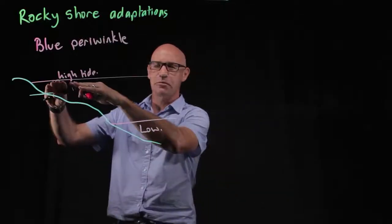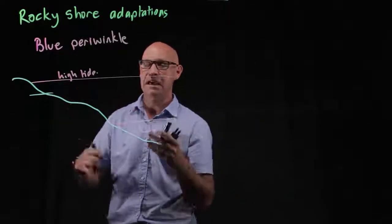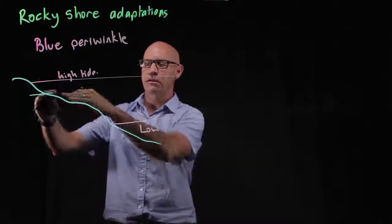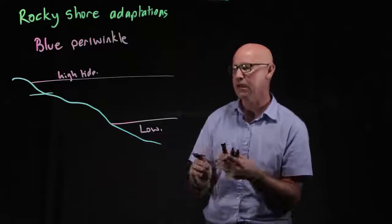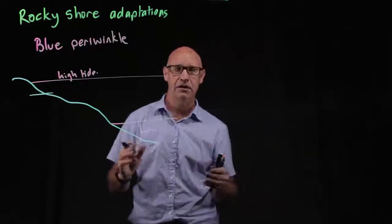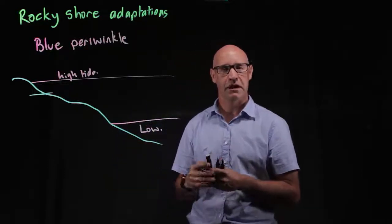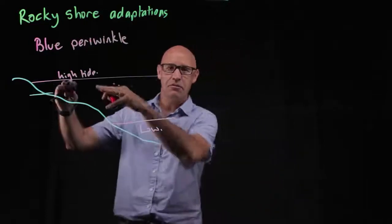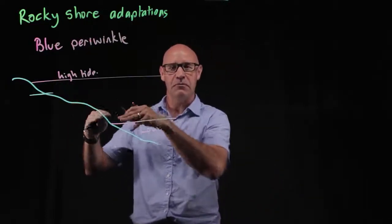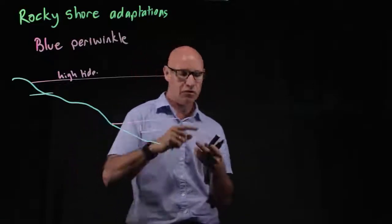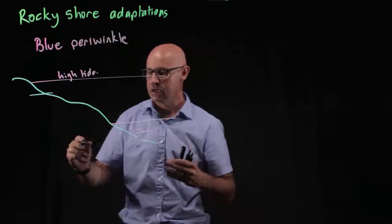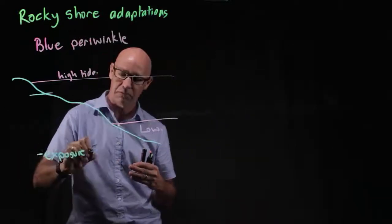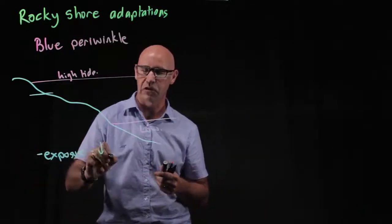That means there are large periods of time each tide cycle when the blue periwinkle is actually out of the water. So with that in mind, let's think about the abiotic factors the blue periwinkle might be exposed to. The main point here is exposure to life outside of the water.